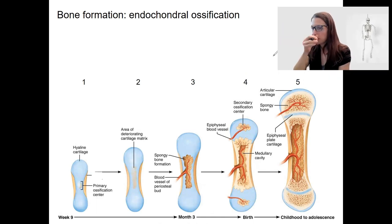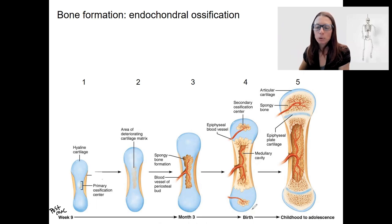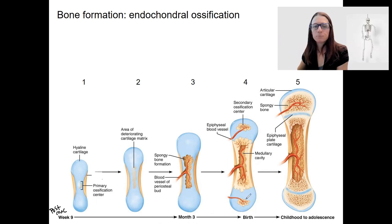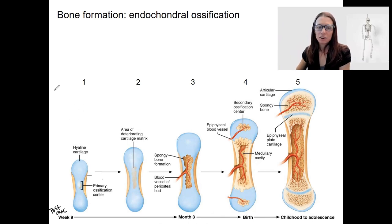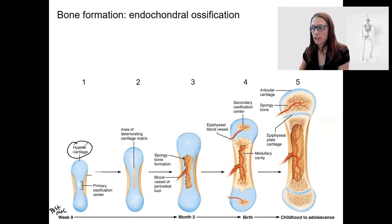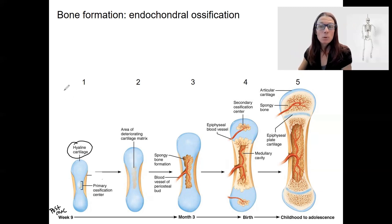Here is an overview of endochondral ossification, starting post-conception at nine weeks and going through month three, birth, and then childhood to adolescence, where growth will continue to occur. Early in development there is no bone — it is all hyaline cartilage, a hyaline cartilage model, which is where the name endochondral ossification comes from. At this time point the bones are growing, and the chondrocytes that make up the hyaline cartilage are enlarging and dividing.